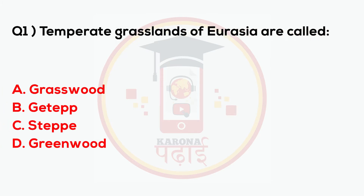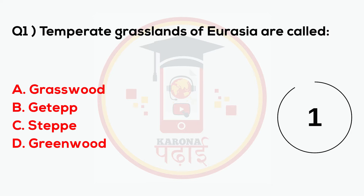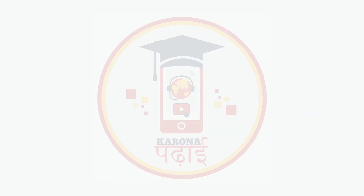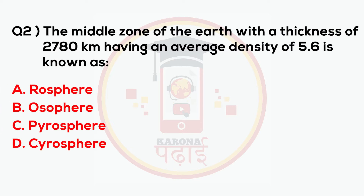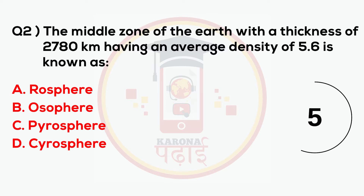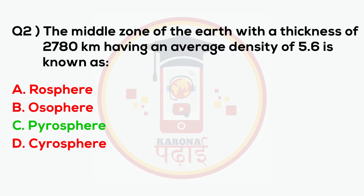Temporary grasslands of Eurasia are called Steppe. The middle zone of the earth with a thickness of 2780 km having an average density of 5.6 is known as Pyrosphere.